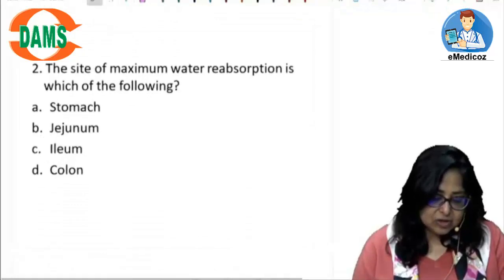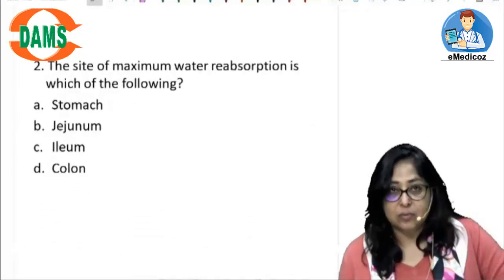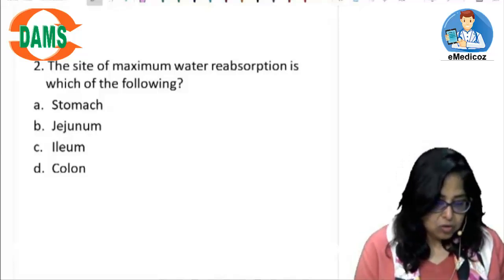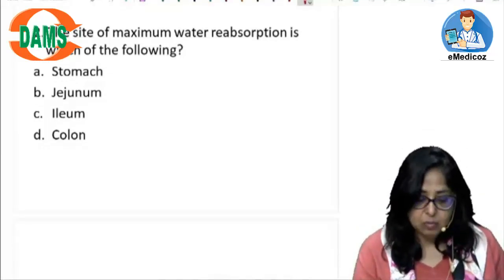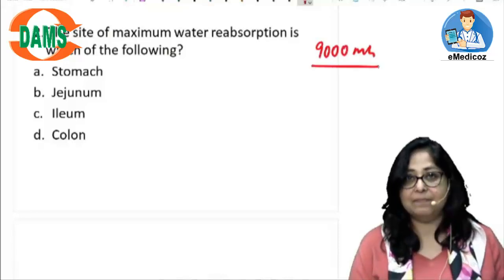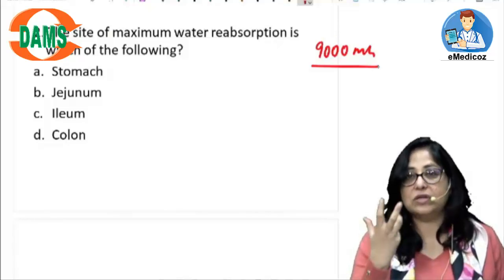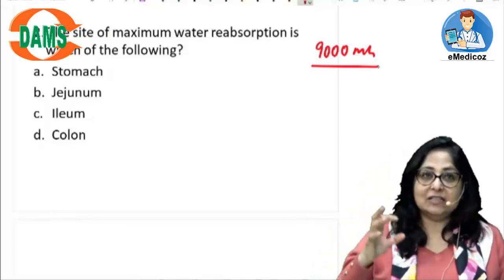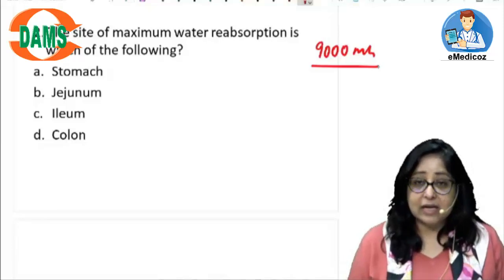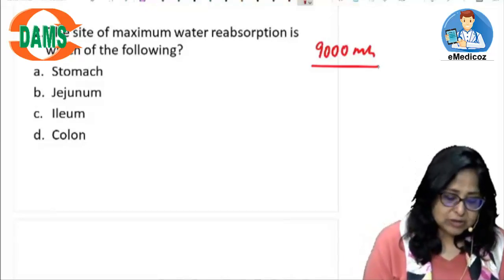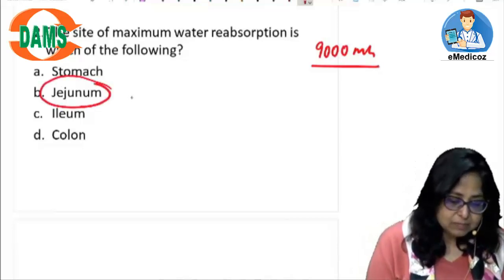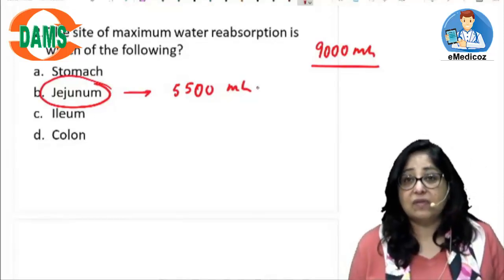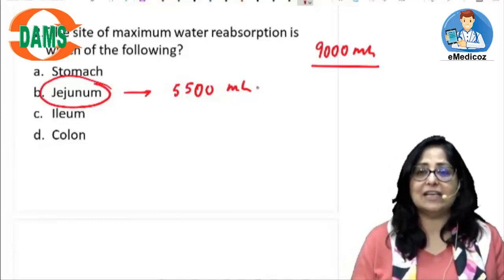The second question asks: the site of maximum water absorption is which of the following? As far as water absorption in the GI tract is concerned, there is almost 9,000 ml of water which enters the small intestine every day — from water we drink, water in food, and our secretions. The site of maximum absorption is in fact the jejunum, which absorbs 5,500 ml out of the 9,000 ml.